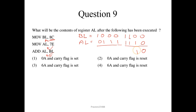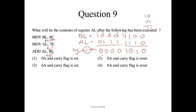Performing the binary addition of 0111 1110 and 1000 1100: the result is 0 0 0 0 1 0 1 0 with a carry flag generated. So the contents of AL would be 0A (hex) and the carry flag is set. Option 1 is the correct answer.